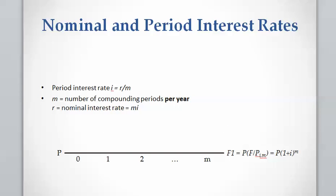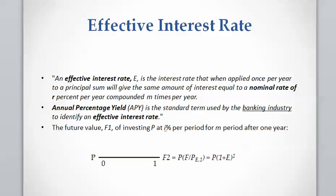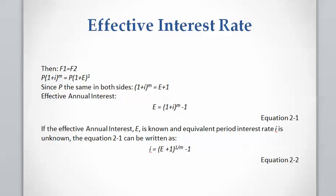Now let's find a general equation. We calculate F1, the future value at the end of year one, using period interest rate i and number of compounding periods per year M. If we calculate the future value at the end of year one using the effective interest rate — called F2 — we get F2 = P × (1 + e)^1. Since F1 must equal F2, we arrive at the equation: the effective interest rate e = (1 + i)^M − 1, where M is the number of compounding periods per year and i is the period interest rate.